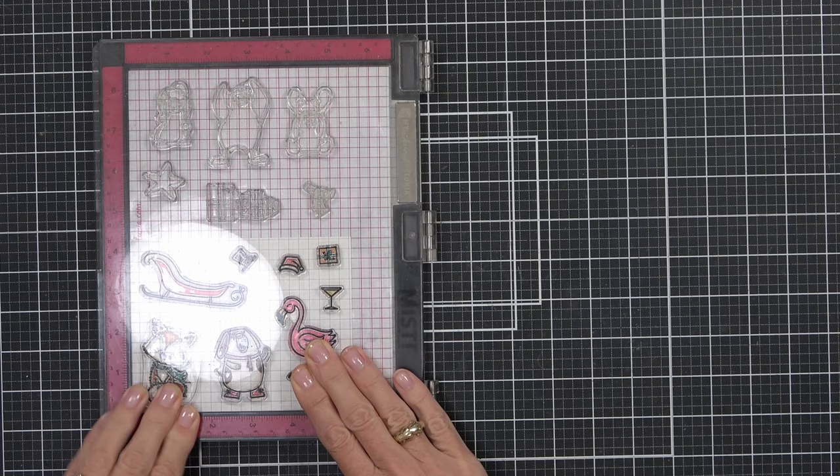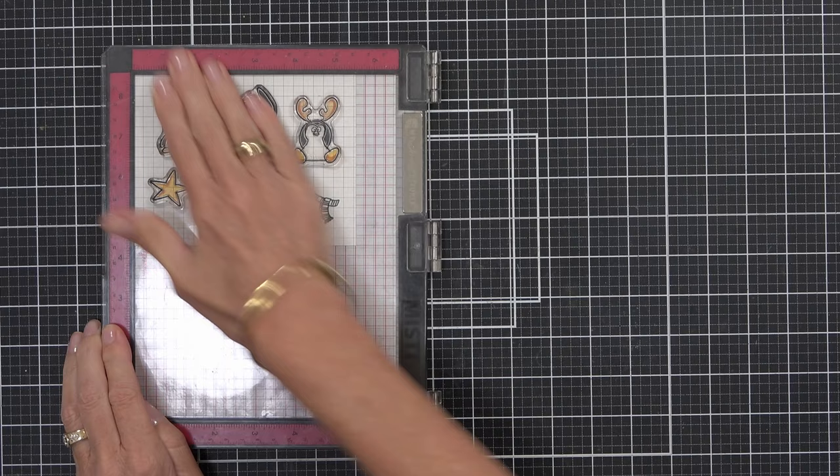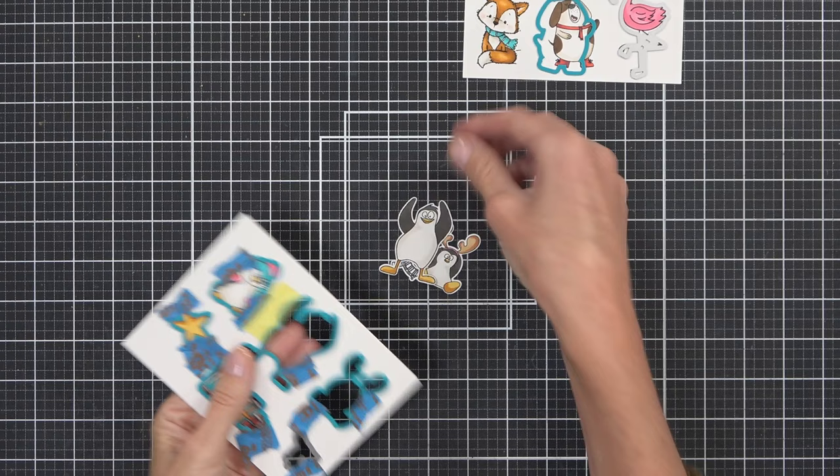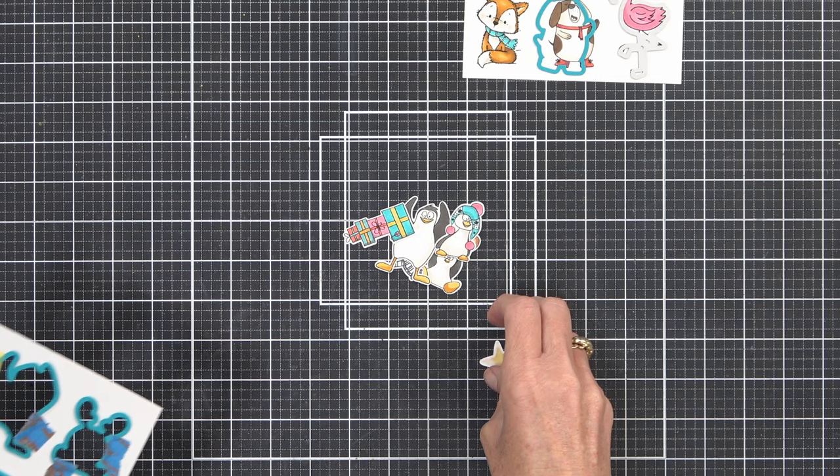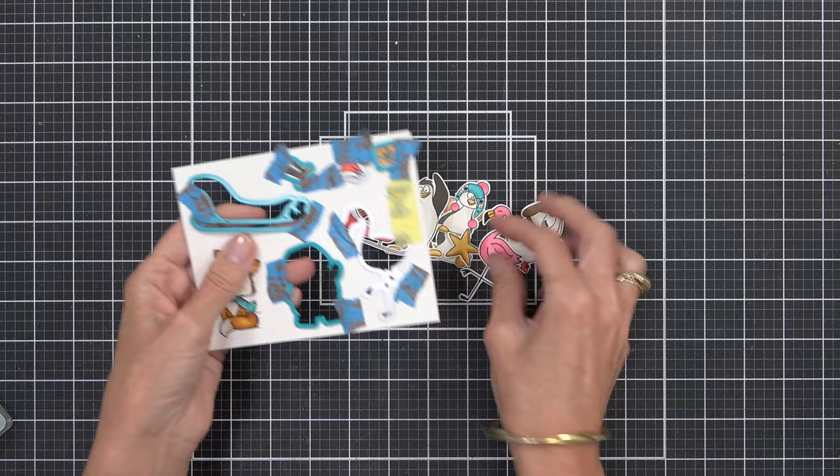Now I have also got coordinating dies for most of these images but you can certainly fussy cut them. I had to fussy cut a couple of them today, including the little fox image here. You see me I do try and push him out of the die but there's no die cut is there.